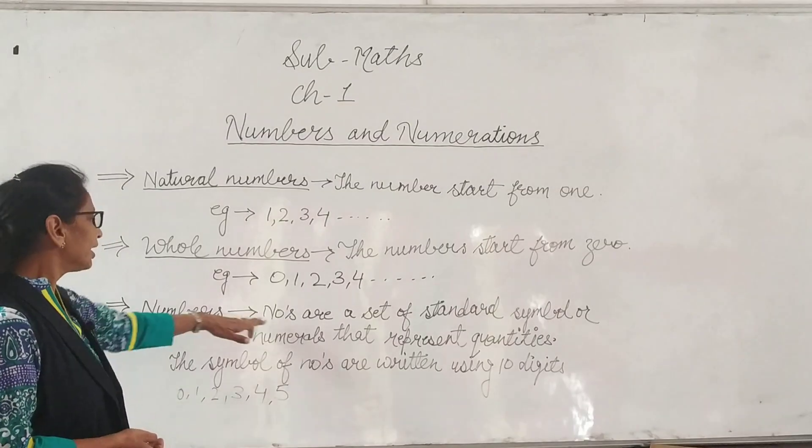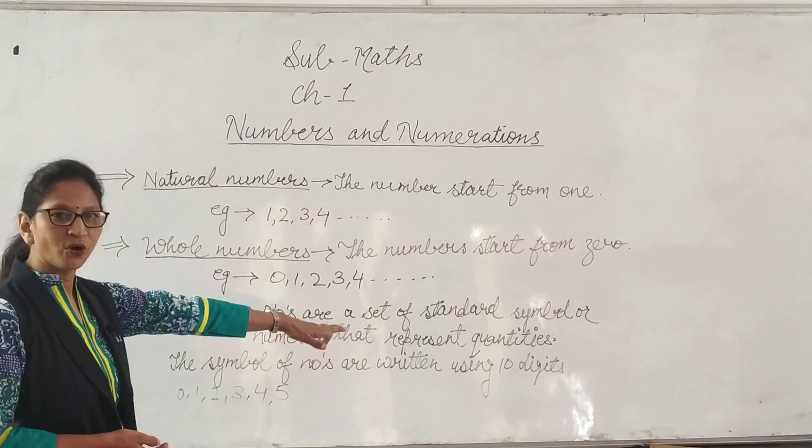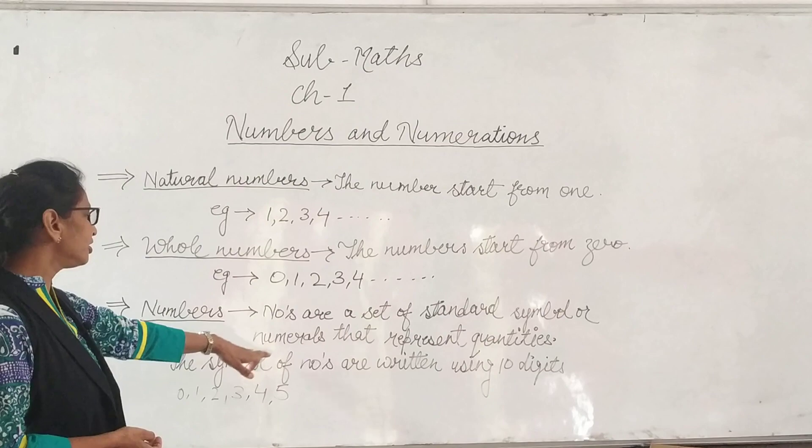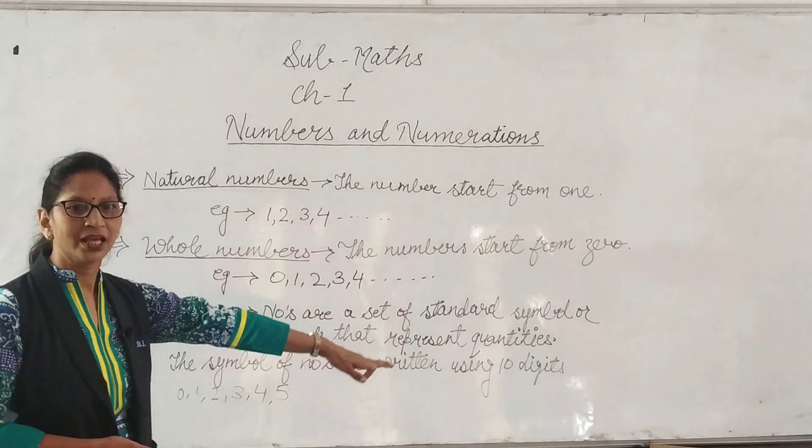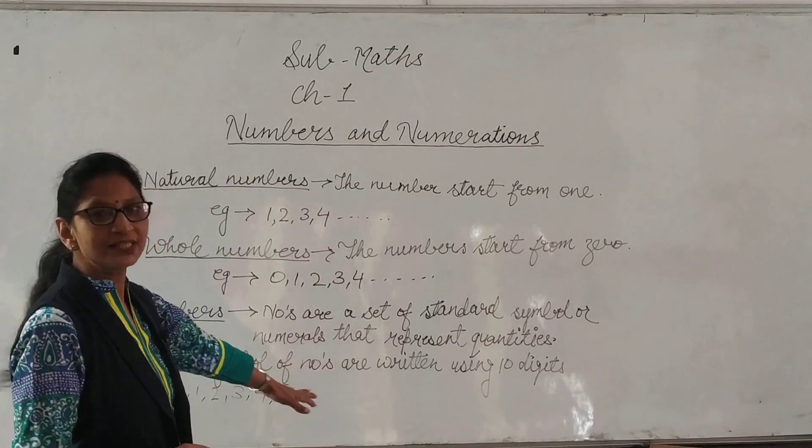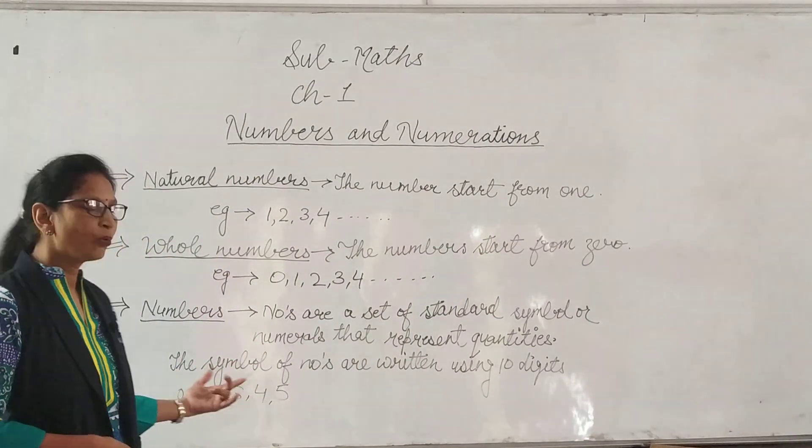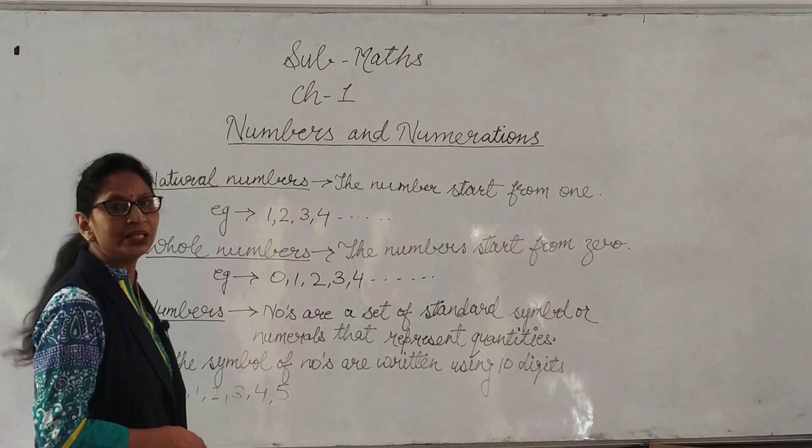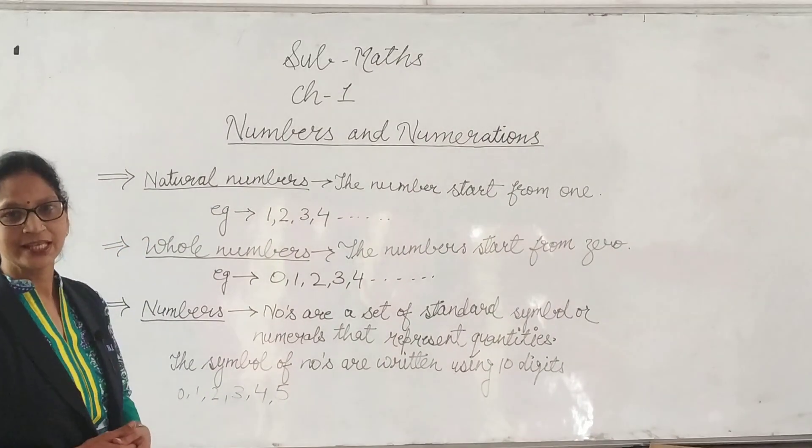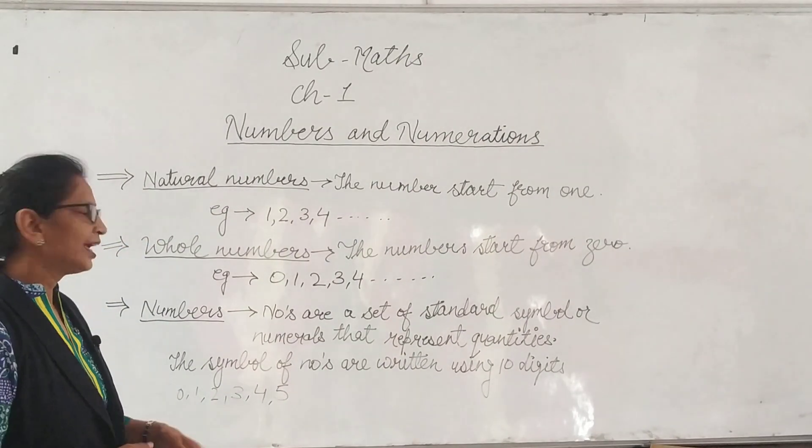Next is numbers. What are numbers? Numbers are a set of standard symbols or numerals that represent quantities. The symbols of numbers are written using 10 digits: 0, 1, 2, 3, 4, 5, 6, 7, 8 and 9.